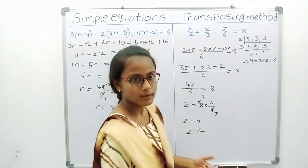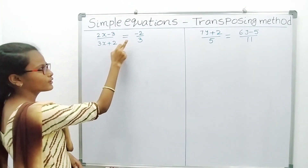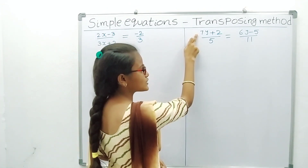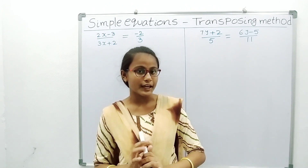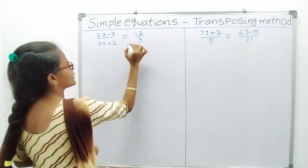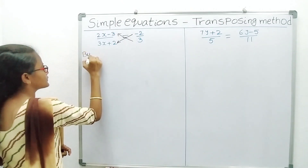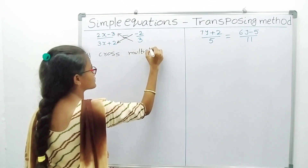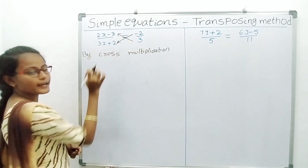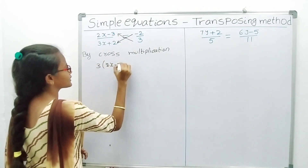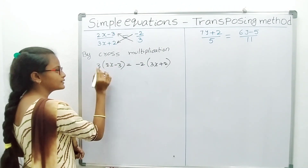Okay, see the last problems. (2x minus 3) by (3x plus 2) is equal to minus 2 by 3. And (7y plus 2) by 5 is equal to (6y minus 5) by 11. For this type of problem, first we do cross multiplication. What is cross multiplication? The denominator multiplies with the numerator on the other side, and the numerator multiplies with the denominator on the other side. So by cross multiplication: 3 into (2x minus 3) is equal to minus 2 into (3x plus 2).